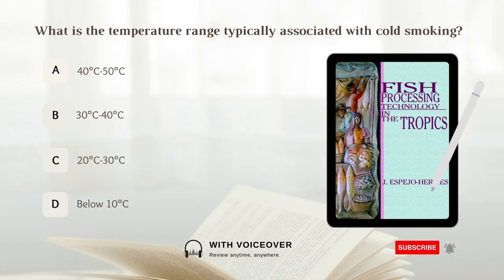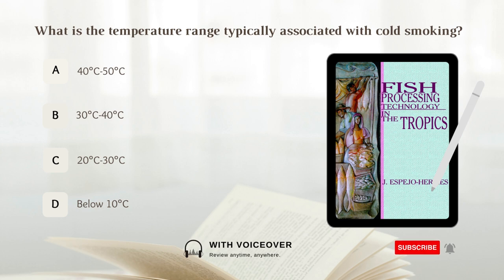What is the temperature range typically associated with cold smoking? A. 40 to 50 degrees Celsius. B. 30 to 40 degrees Celsius. C. 20 to 30 degrees Celsius. D. Below 10 degrees Celsius. Answer: C. 20 to 30 degrees Celsius.